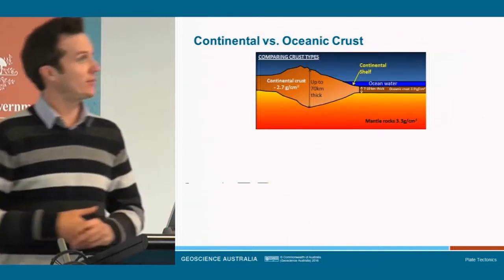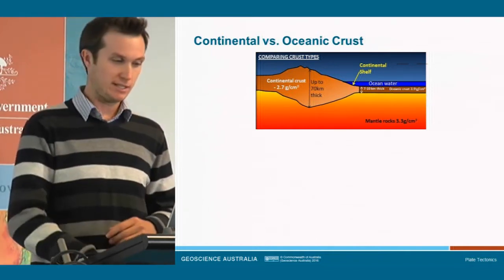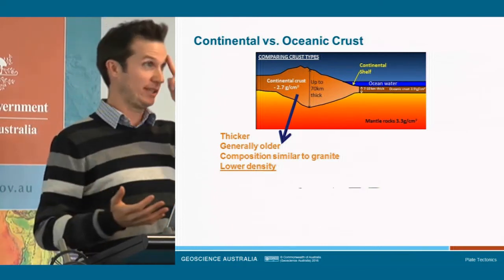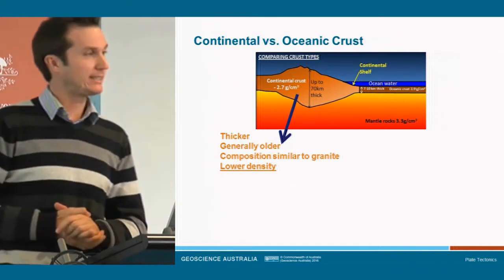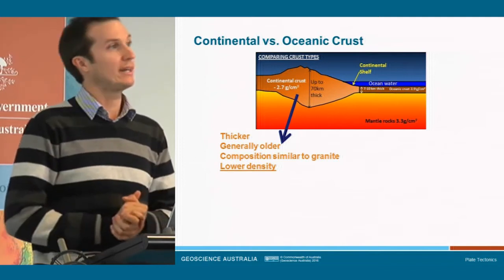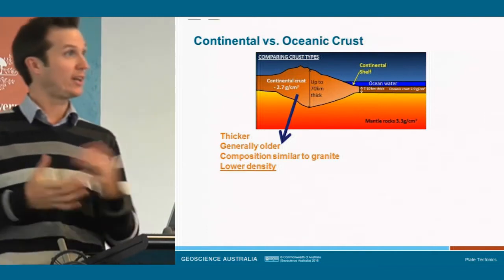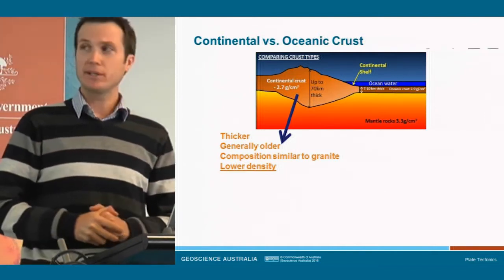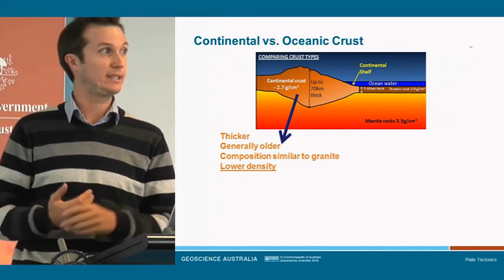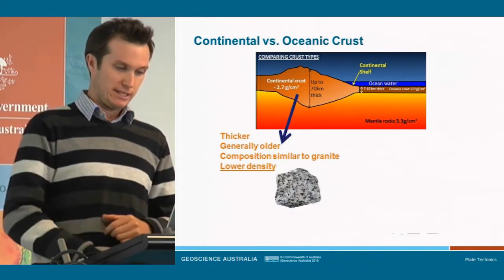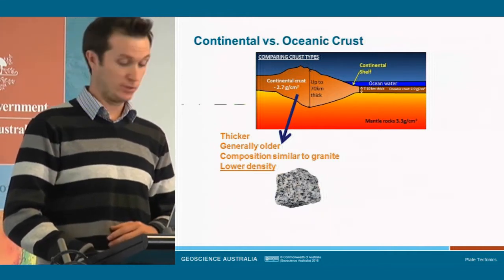The second concept is that there are two main types of crust on the Earth. The first is continental crust — what we're standing on, sitting on, building on at the moment. This is generally thicker, generally quite old, and has a composition quite similar to granite. Many of you would have seen granite on workbenches or gravestones — quite a hardy rock. The key thing is that it has a relatively low density compared to most rocks we see on Earth.